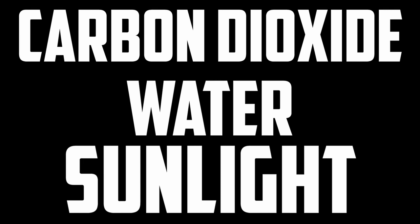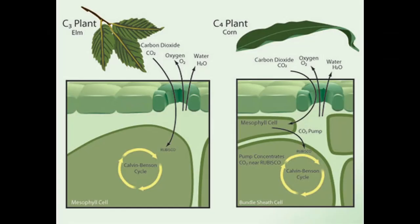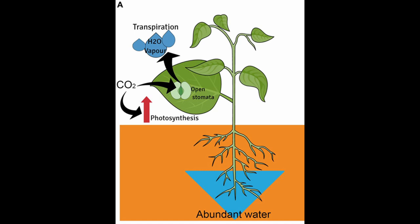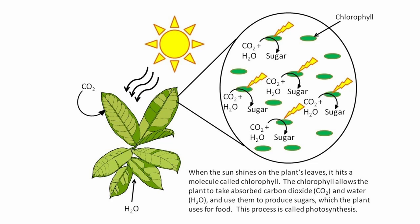Let's take a look at how these are collected by plants. Carbon dioxide from the air passes through small pores in the leaves. These pores are called stomata. Water is absorbed by the roots and passes through the vessels in the stem on its way to the leaves. Sunlight is absorbed by a green chemical in the leaves.